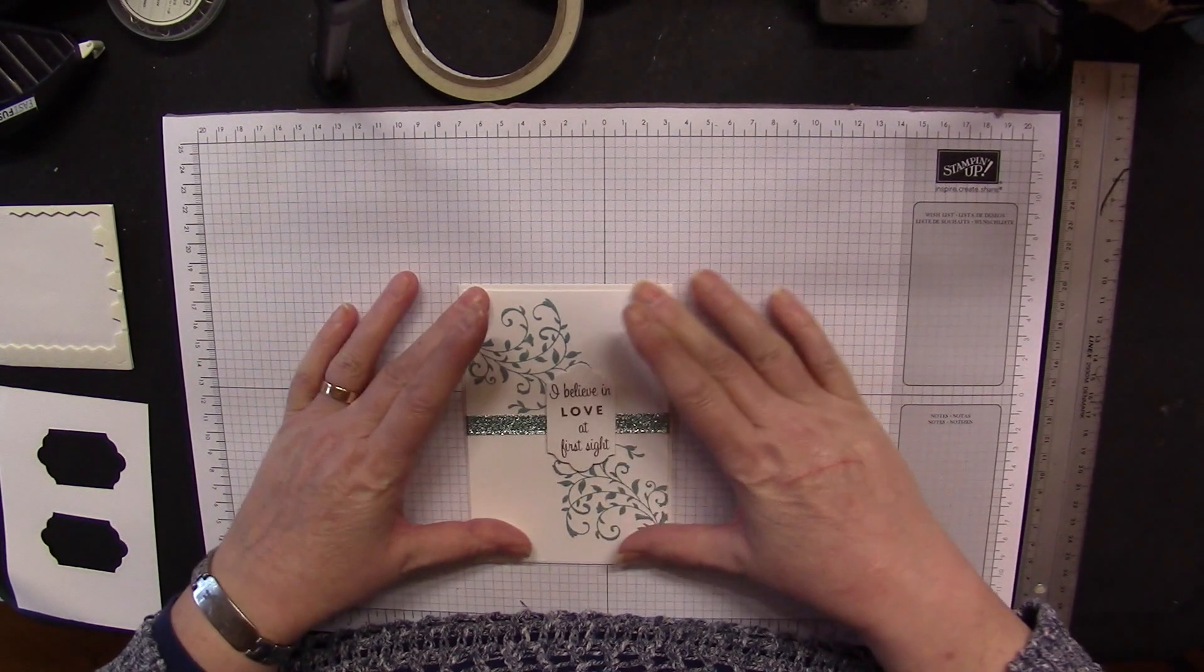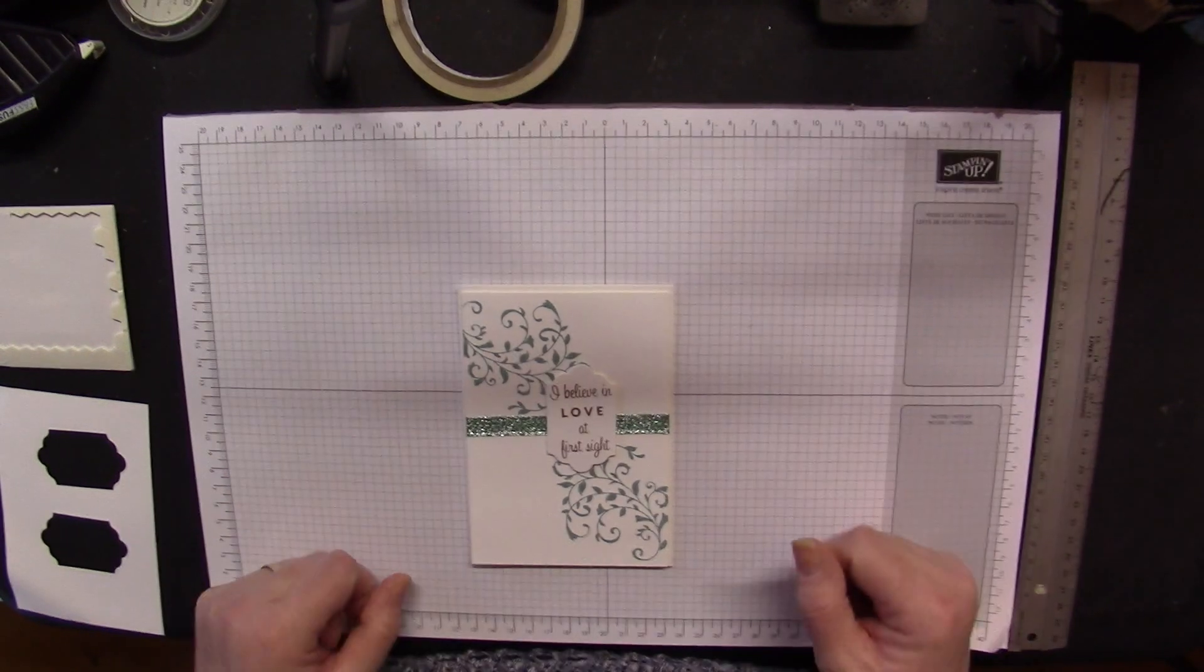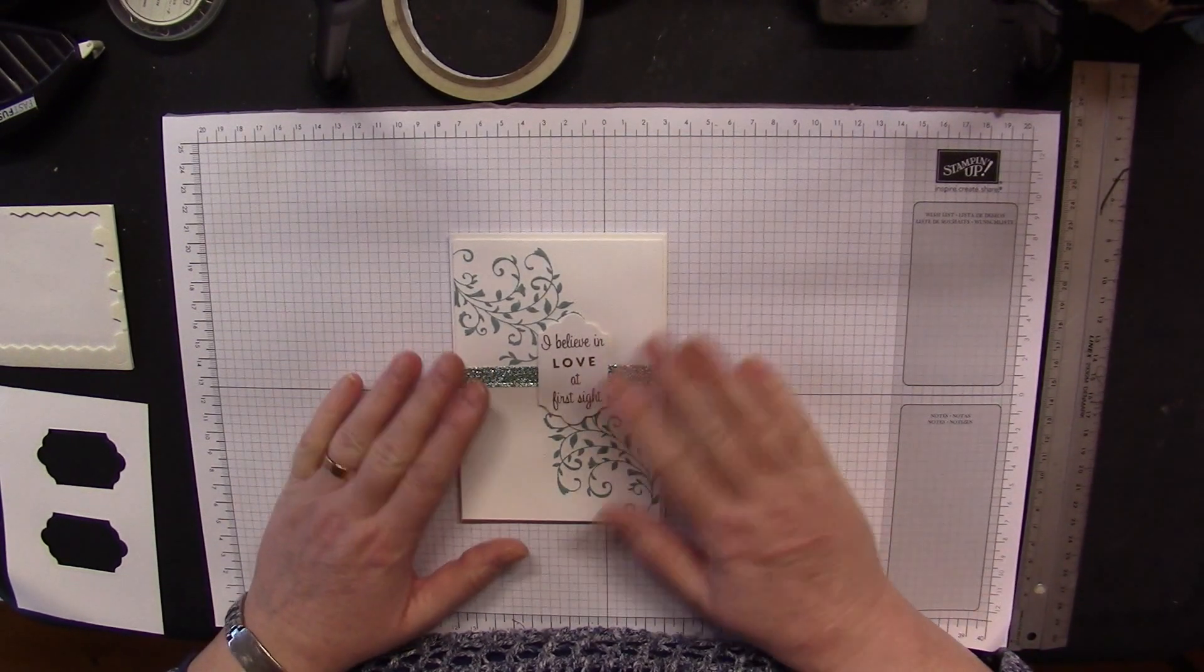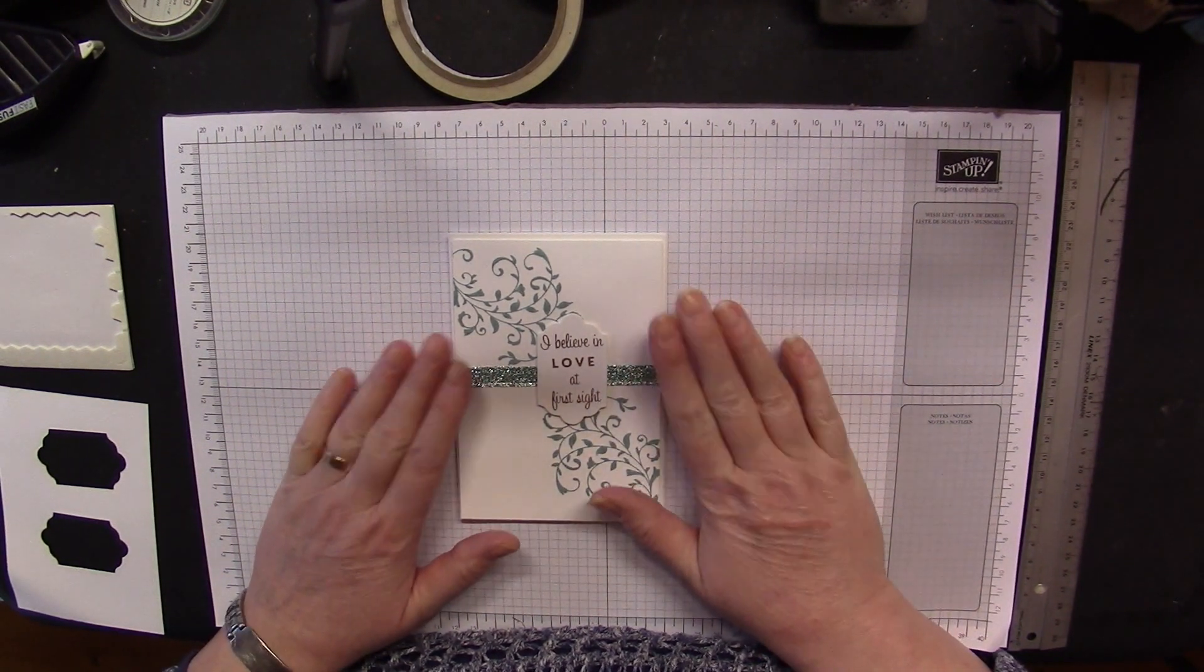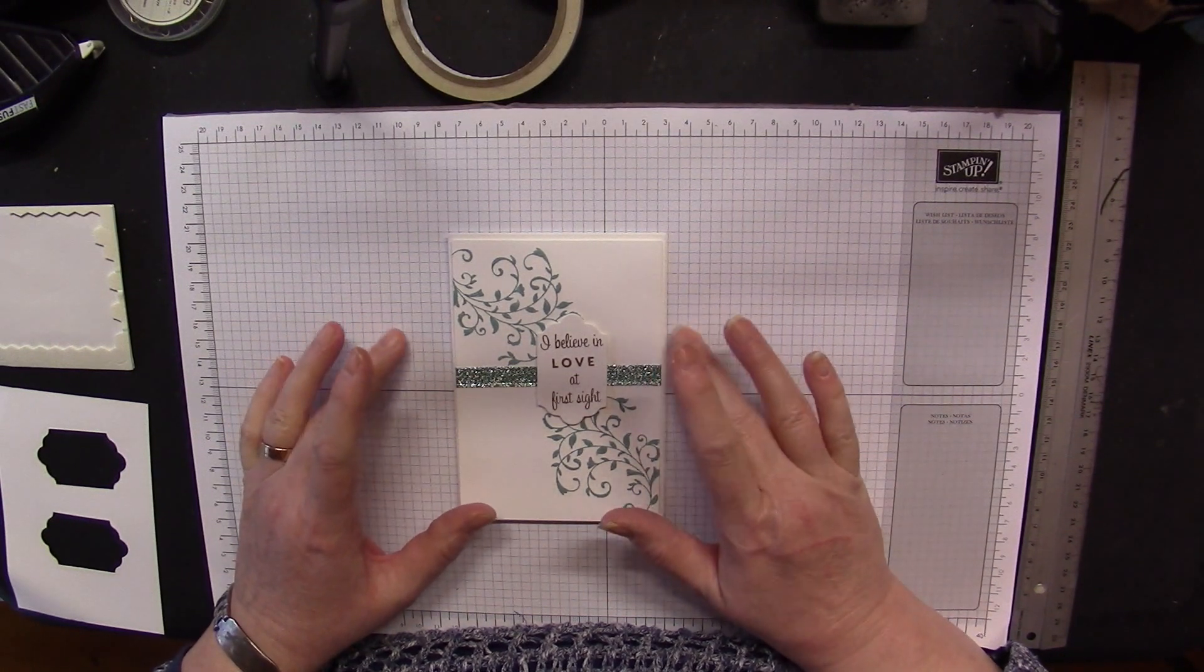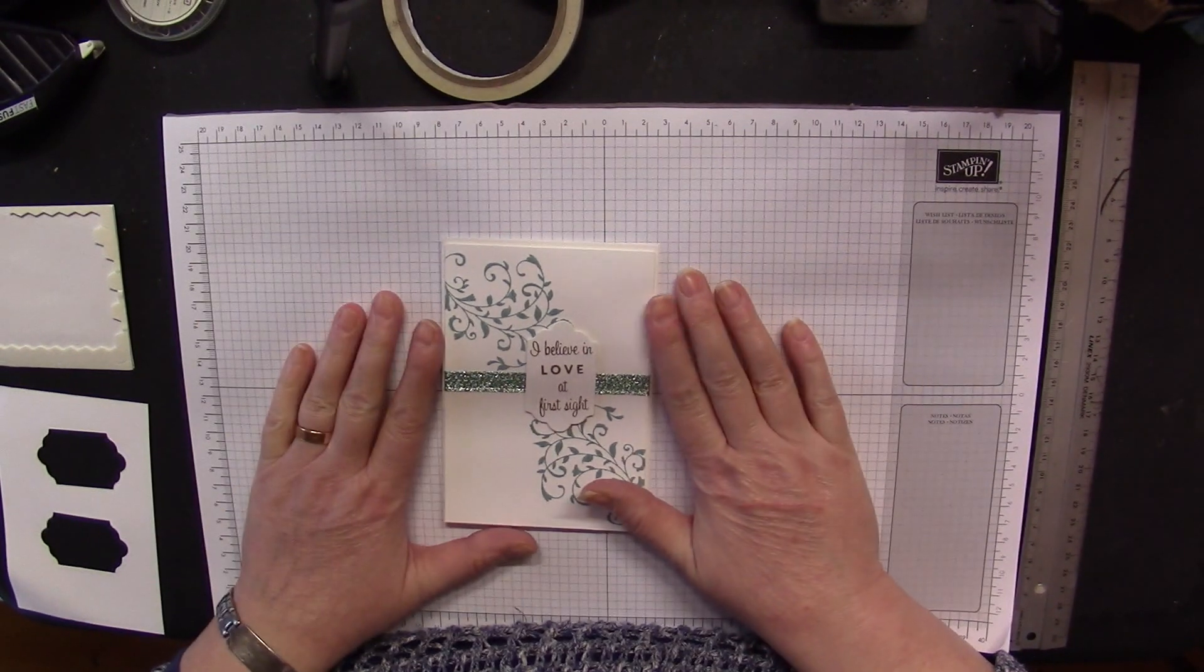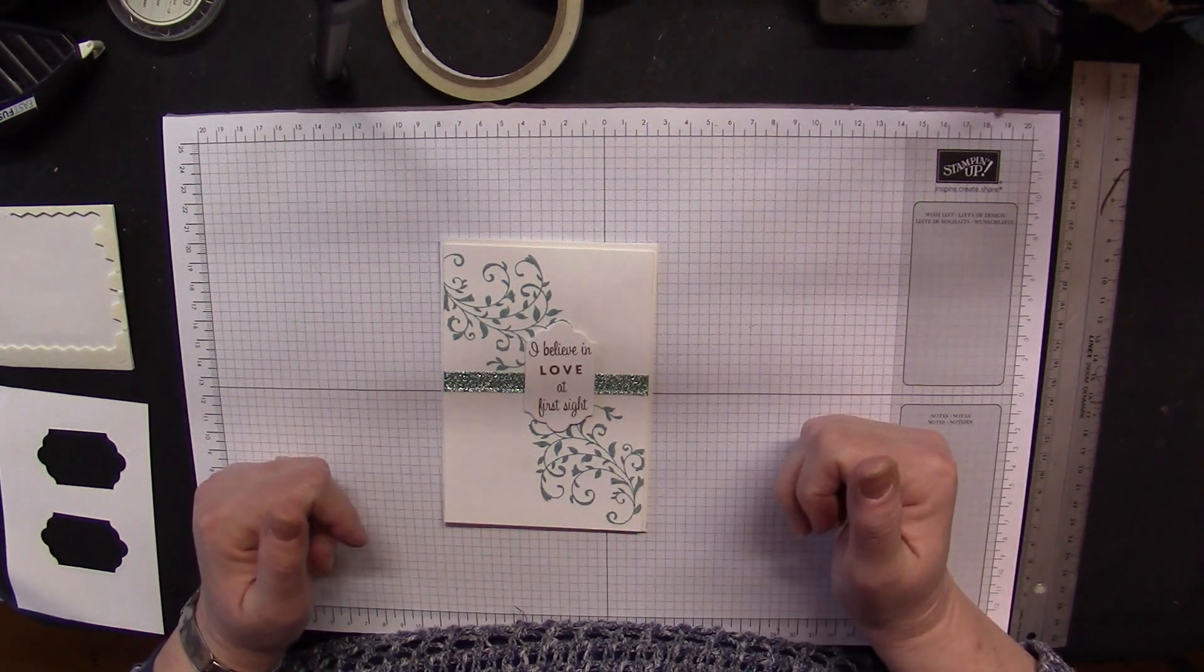And that goes down on there and that is your card made. How quick was that? It was fab, wasn't it? Twelve minutes, and that's with me waffling. The full tutorial will go live on my blog the same time as it goes live on YouTube at www.stampingatthewarren.blogspot.co.uk.